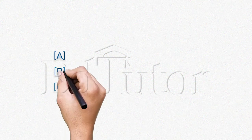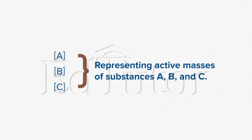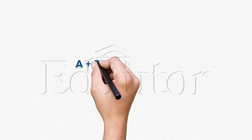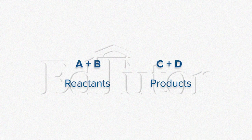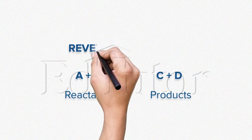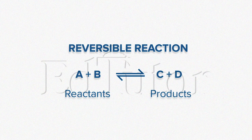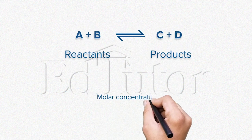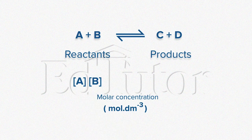Substances that are enclosed in square brackets are generally used to represent active masses. Let's consider a reversible reaction, in which A and B, the reactants, react to form products, C and D. Remember, the double arrow signifies a reversible reaction.